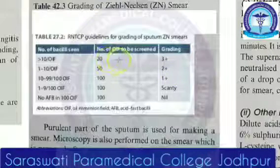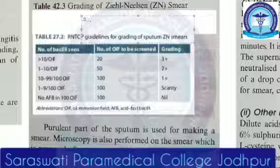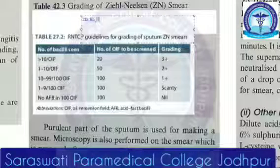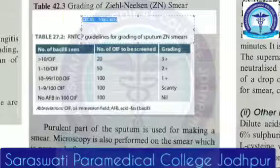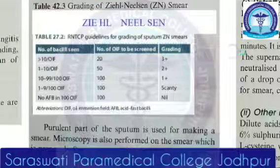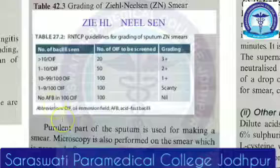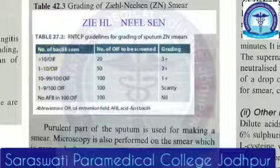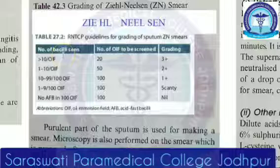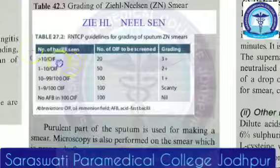Whenever you do direct microscopy under Ziehl-Neelsen stain, please focus on the spelling: Z-I-E-H-L N-E-L-S-E-N. This is acid-fast staining — you can also explain how to do the staining. Now, the number of bacilli you see matters: if you are seeing greater than 10 bacilli in 20 oil immersion fields, the grading is the highest.